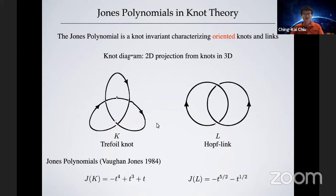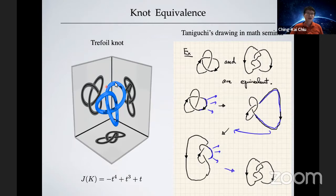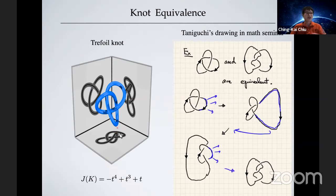Let me show an example focusing on the trefoil knot. This is called knot equivalence. Here you can see a 3D trefoil knot, and we can project it in multiple ways — to this plane, to this plane, and to the bottom plane — giving us three different-looking diagrams. But all three knot diagrams describe the same thing and can be described by the same Jones polynomial.